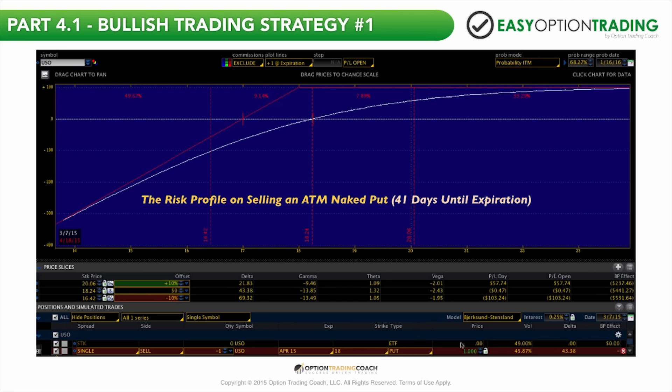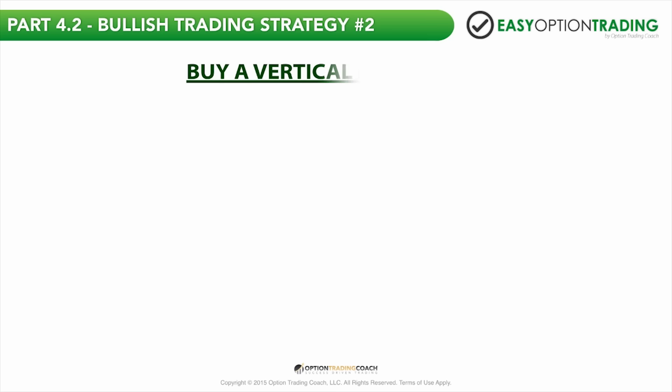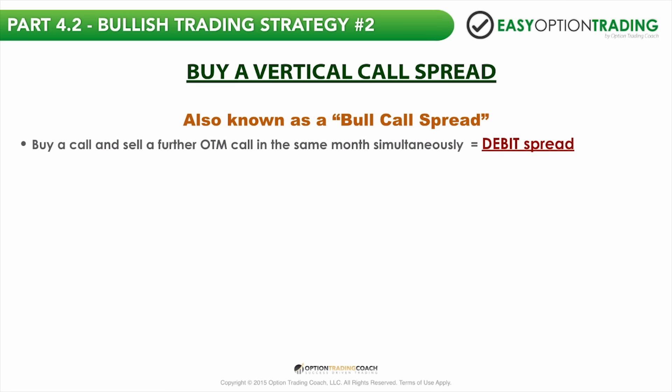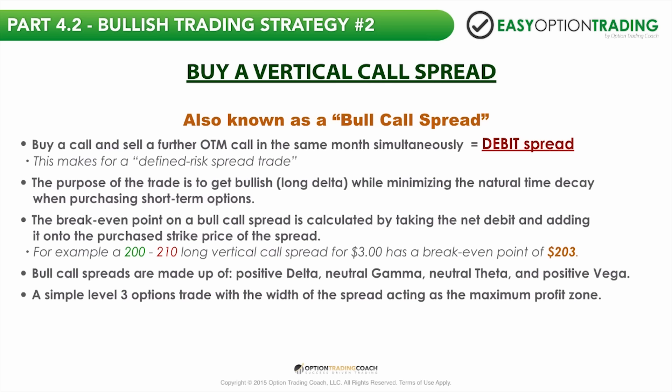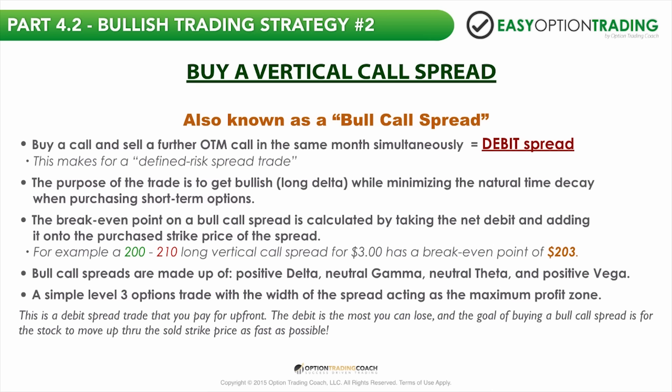By a vertical call spread — this is the second bullish trading strategy you're going to learn. You're buying and selling a further out-of-the-money call in the same month simultaneously, and it's a debit spread — a two-legged or two-part option trade. Bull call spreads are made up of positive delta, neutral gamma, neutral theta, and positive vega. The width of the spread acts as your max profit zone, and the debit is the most that you can lose. The risk is defined here — that's why you create a spread, so that you can't lose more than what you put up.